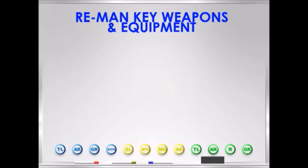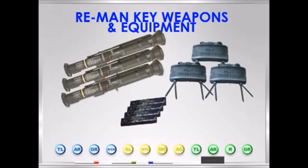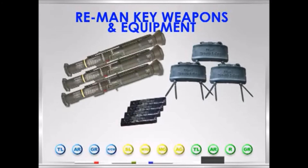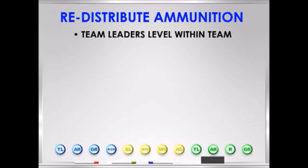The team leaders can carry their team's M203s if necessary. All supplemental ammo — AT4s, M18s, DEMO, etc. — are cross-leveled between the teams. Since squad members probably fire differing amounts of ammunition, the squad leader ensures that ammunition is equally distributed throughout the squad. The squad leader relies on his team leaders to know the ammunition status of their team members and to redistribute the ammunition accordingly.